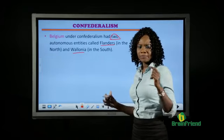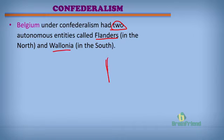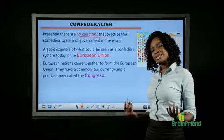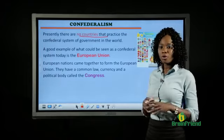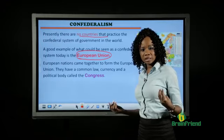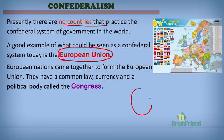One major reason why these different countries came together to form this confederacy was majorly to get defense, protection, and superiority in war and battles. Presently, no country is practicing confederalism as a system of government. However, a good example of a recent organization practicing confederalism is the EU — the European Union — where independent, sovereign, or autonomous states come together to form a confederacy with a central government, making it a confederal system.